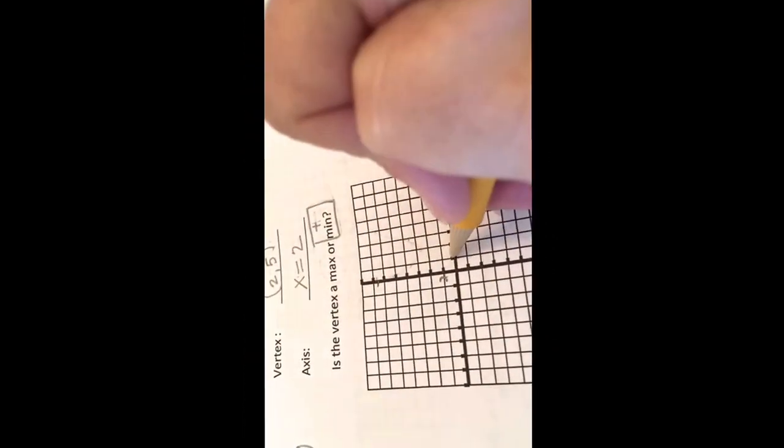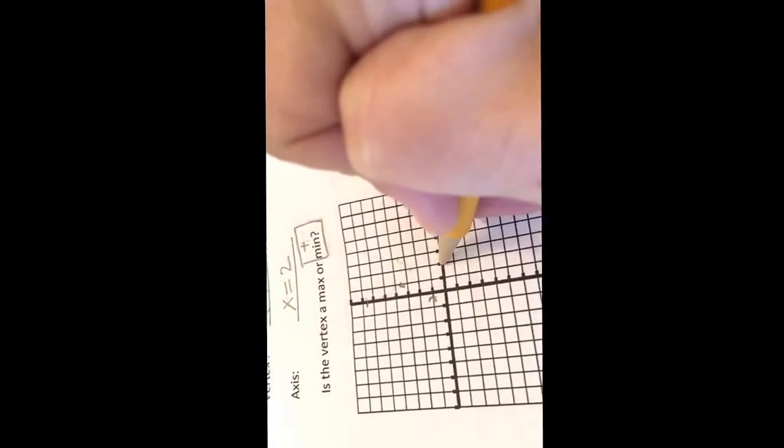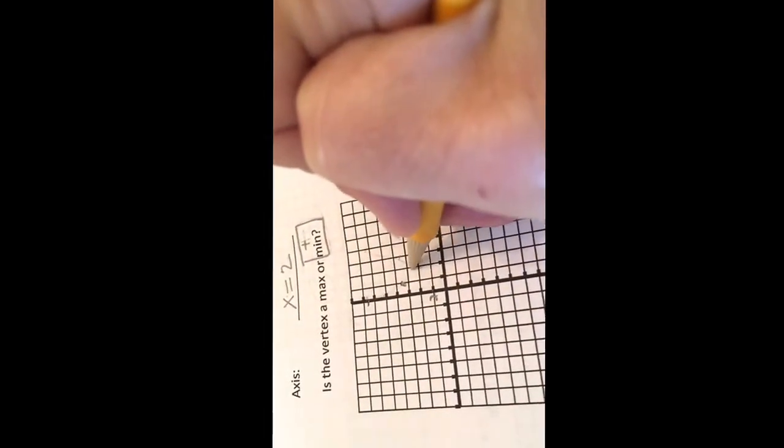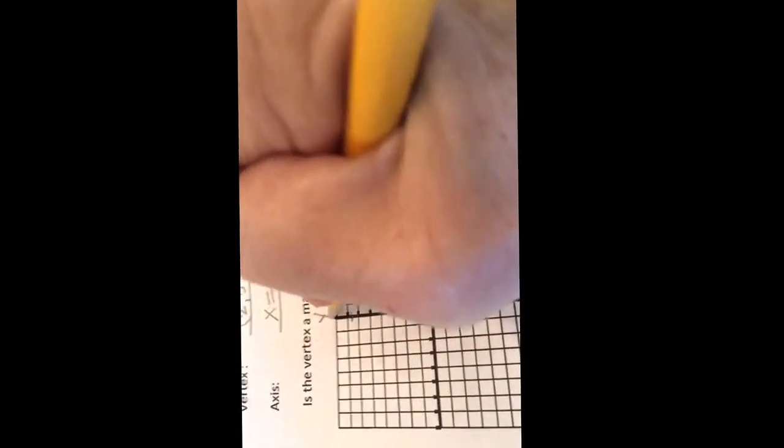This one, we're going to have 1 and 7. 2, 4, 6, 7. 2, 5. 2, 4, 5. Notice how we're going by 1's on x and 2's on y.